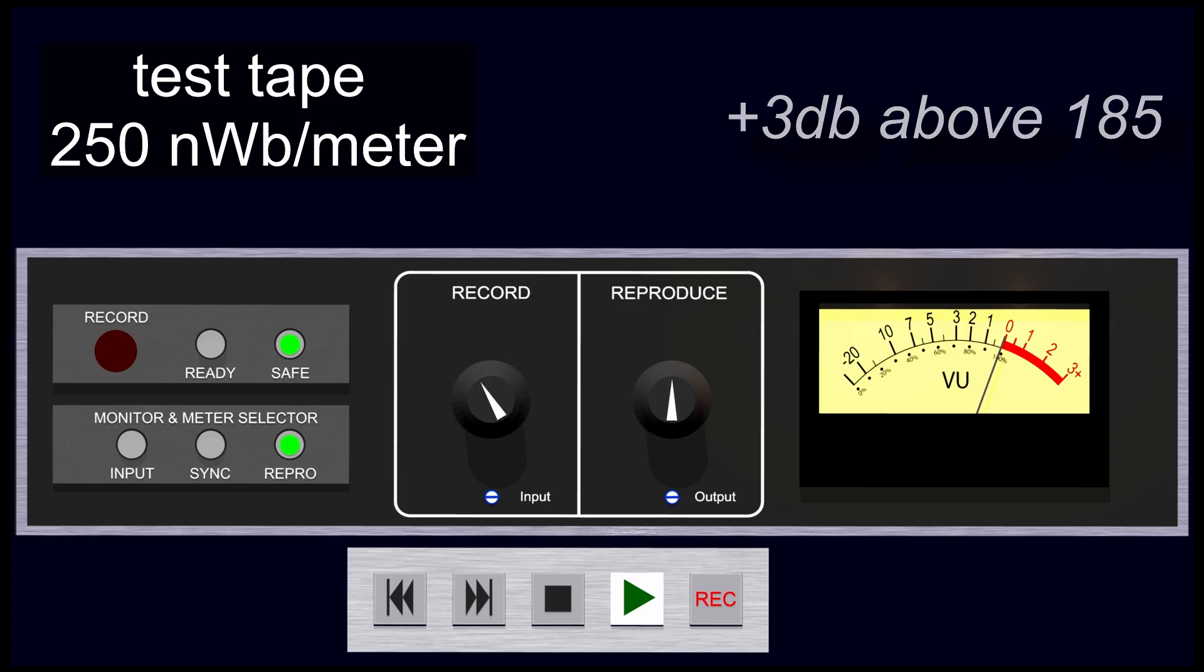If you want to record alignment to be plus 6, you would set your playback level to minus 3, and if you want your record alignment to be plus 9, you would set your playback level to minus 6.